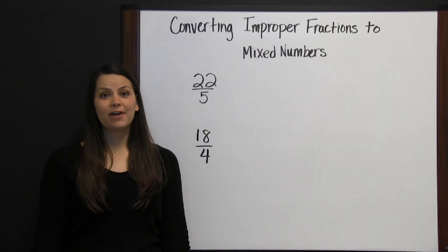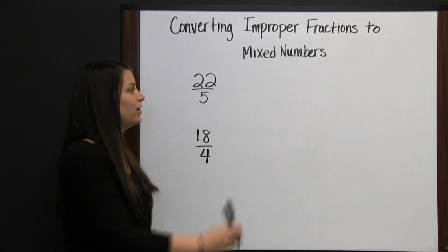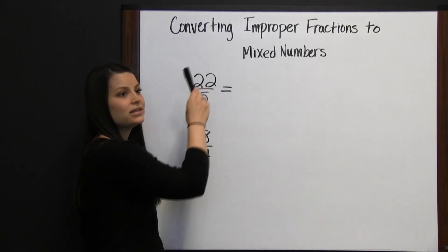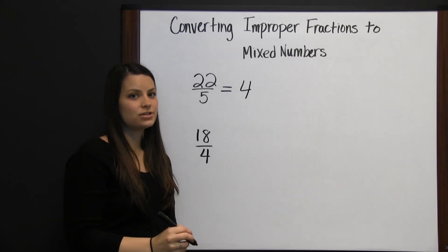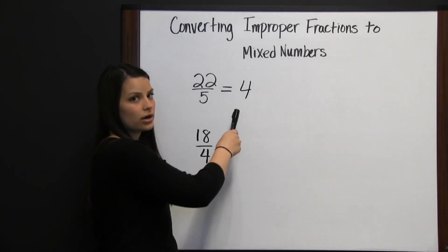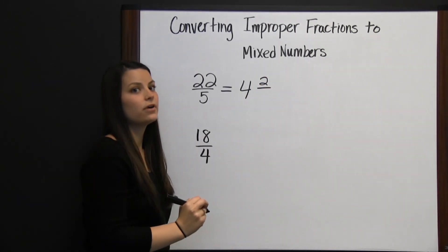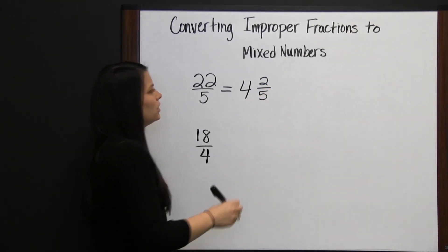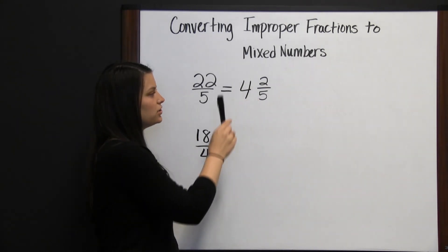Converting improper fractions to mixed numbers. To convert an improper fraction to a mixed number, first we're going to divide our numerator by our denominator. 22 divided by 5 is 4 with a remainder of 2. 4 is our whole number, while 2 is the numerator of our fraction, and the denominator stays the same. So 22 fifths as a mixed number is 4 and 2 fifths.